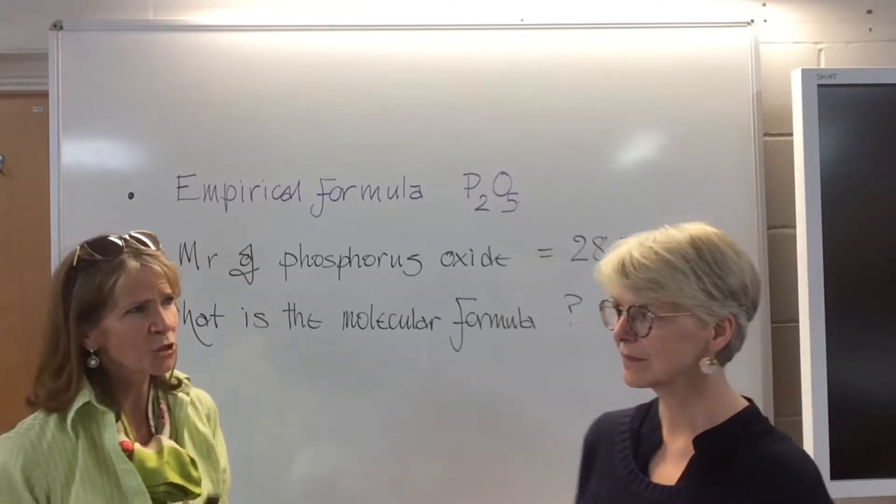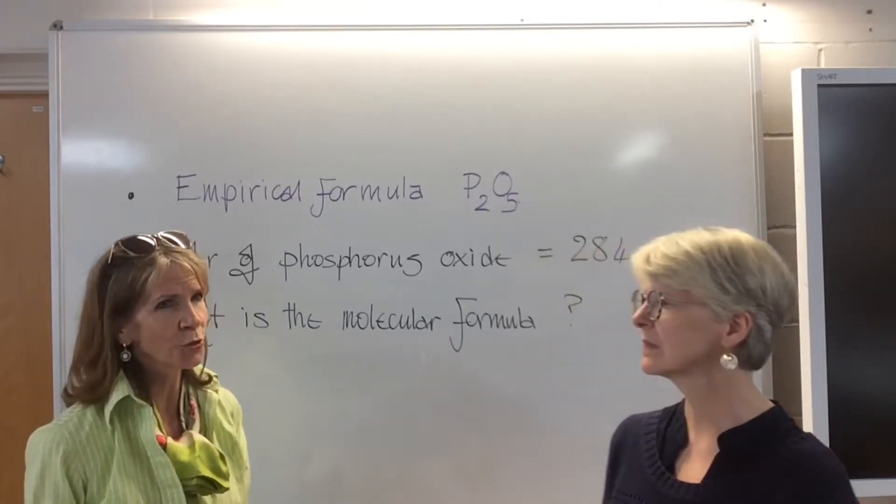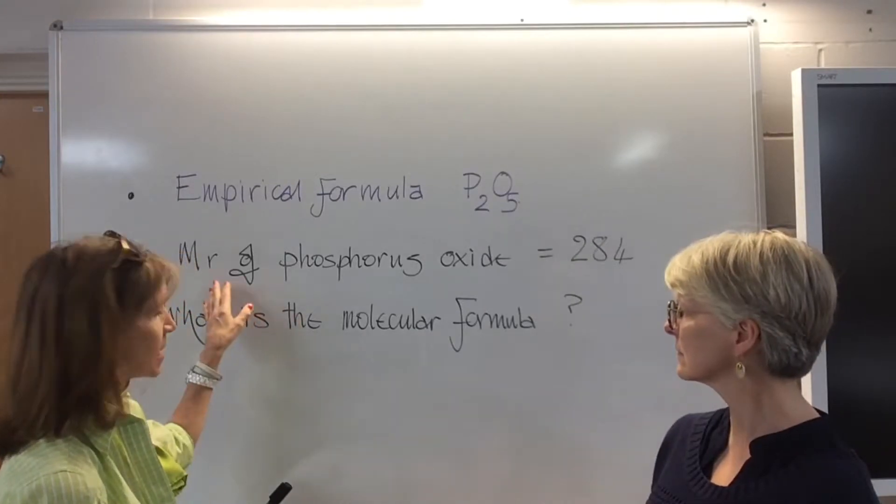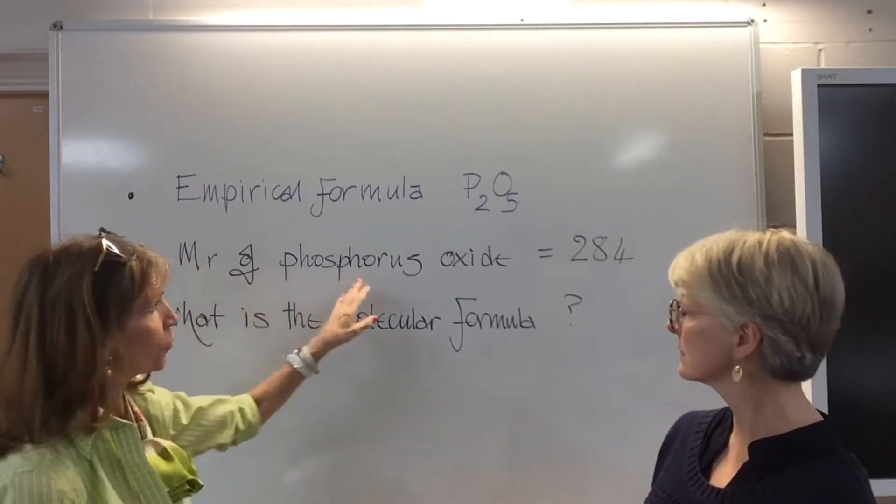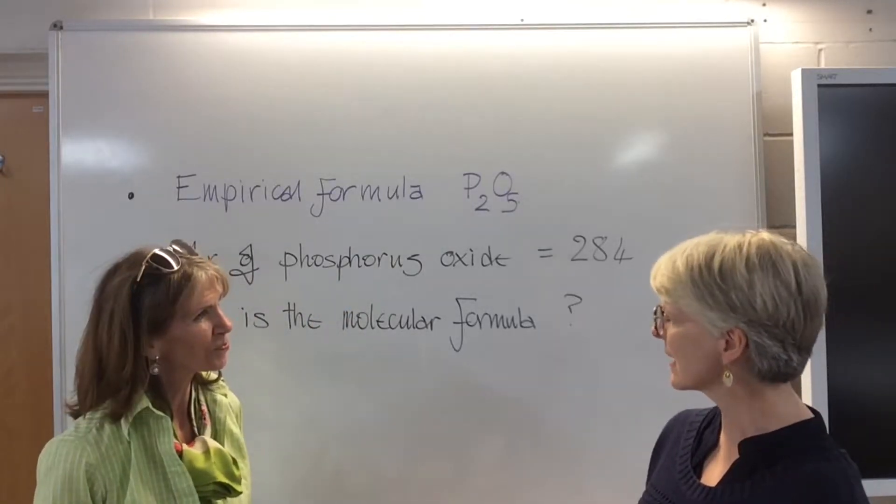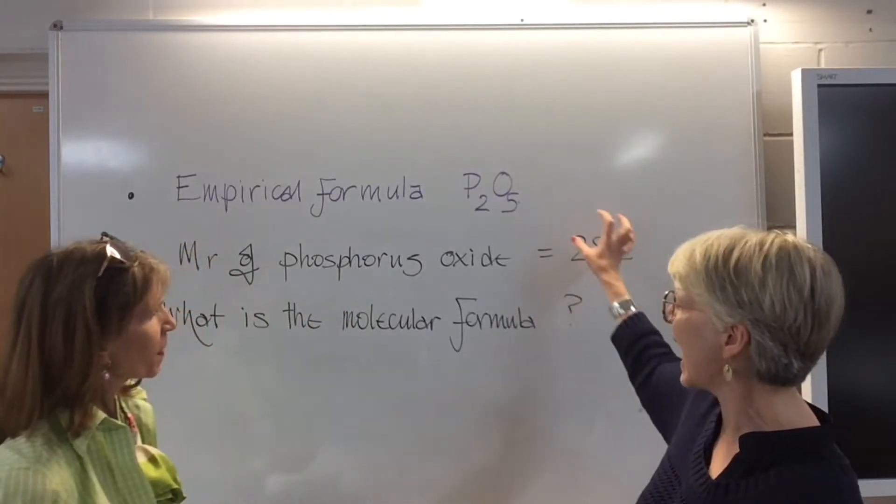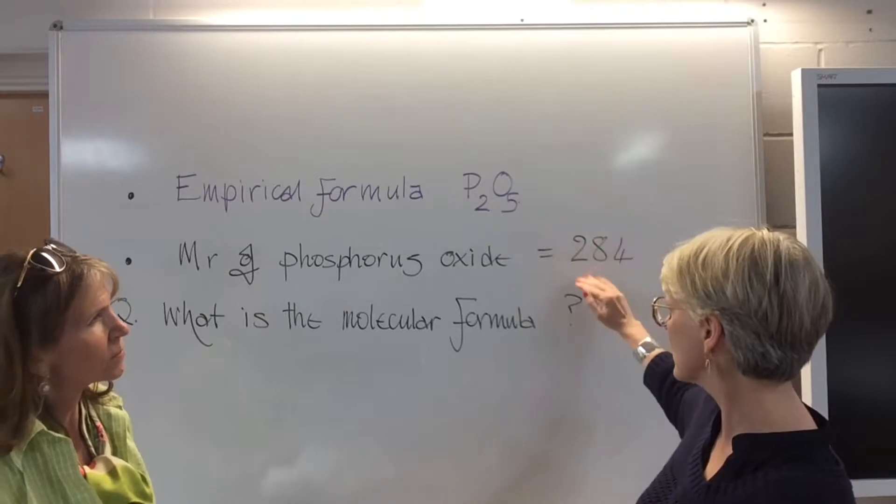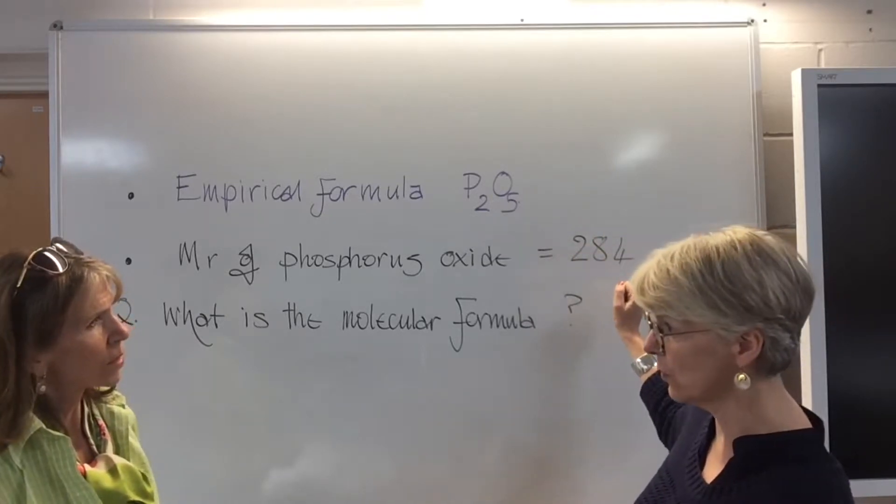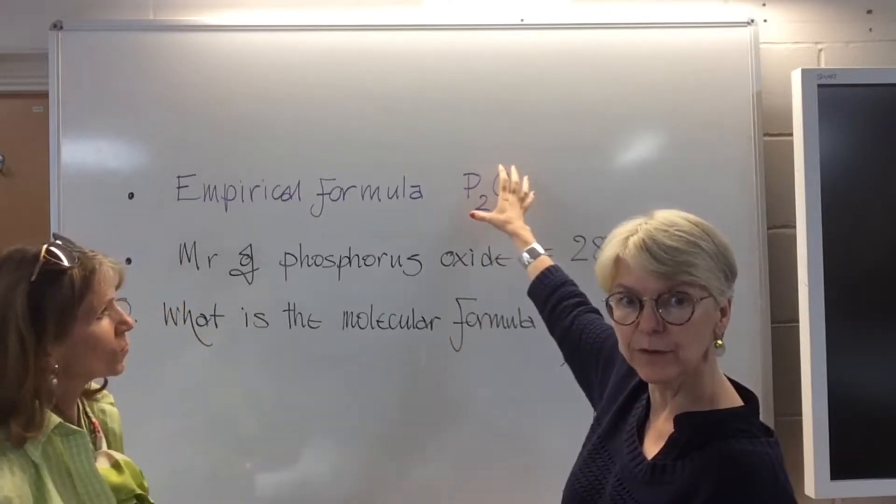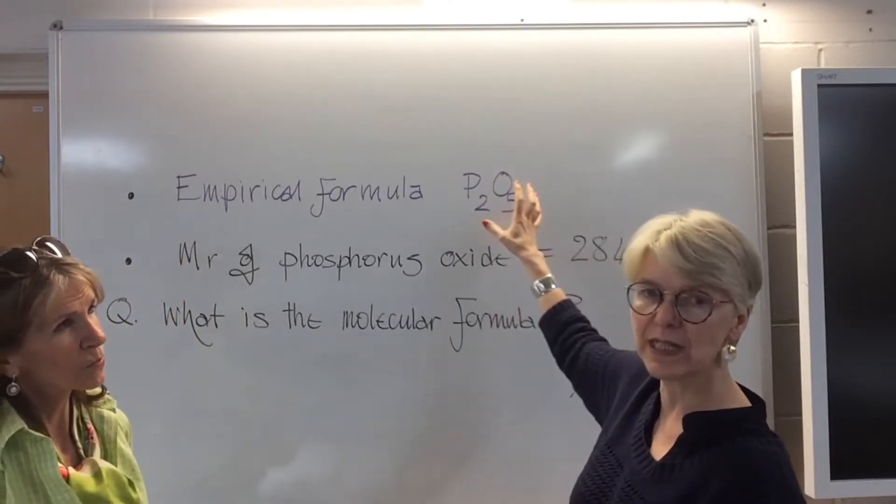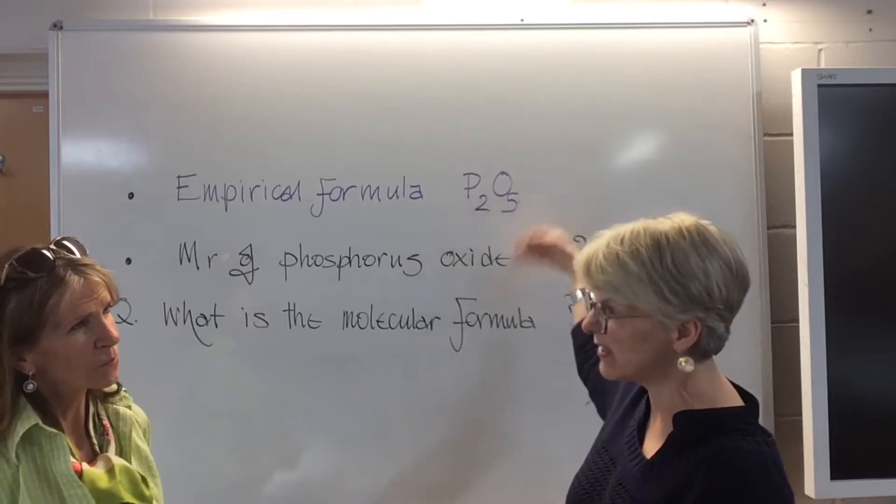All right, okay, and the information that we need in order to do this is the second piece of information, which is the MR of phosphorus oxide. Exactly. So, this gives you the mass of the actual molecule, which in this case is 284. Right. You then have to work out the mass of the empirical formula and compare the two.